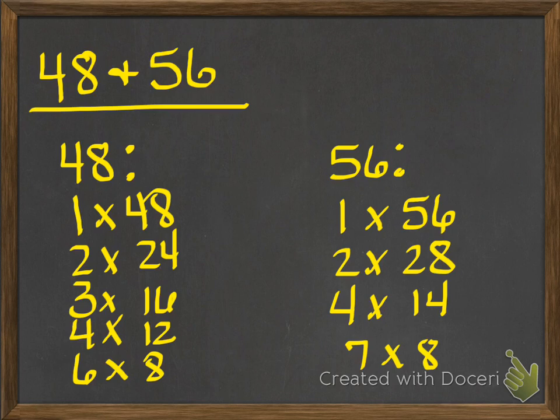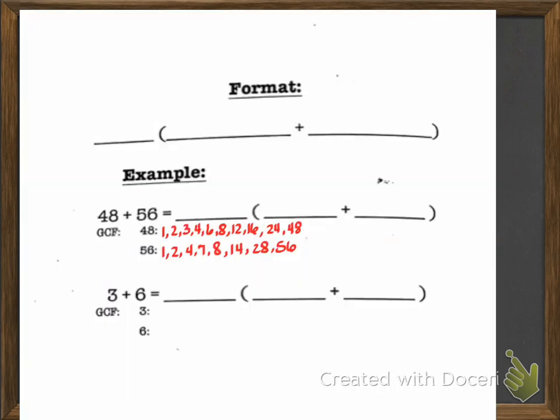Now I'm going to look at my two sets of factors and find the largest one they have in common. That one happens to be 8. So I'm going to go ahead and circle it on my paper. The two that we said were in common were the 8. That is our greatest common factor.